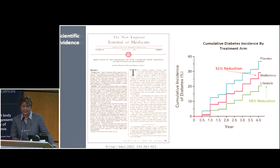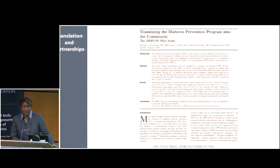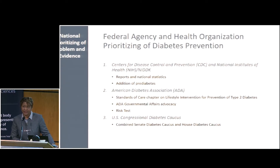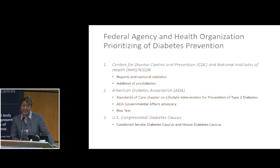The multi-center trial was stopped early because of the definitive results. That intervention was then translated through research funded by NIH and by our Centers for Disease Control and Prevention, or CDC, which developed partnerships with community-based agencies and organizations to deploy the intervention in real-world settings. Those real-world setting trials proved effective, and there was a stage of national prioritizing of diabetes and prediabetes — with evidence that we can actually prevent or delay onset of type 2 diabetes.